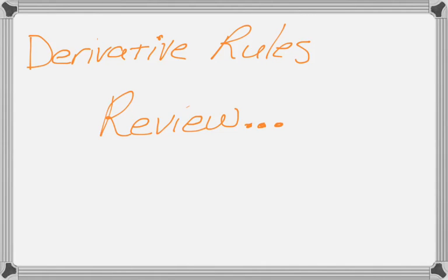Alright, this is a quick review of some of the rules of taking derivatives. I'm assuming that you remember the sum and difference rule, which just says take the derivative of each thing and then take the sum or difference, and the constant multiple rule, which just says if you have a constant multiple, take the derivative and then multiply by it.